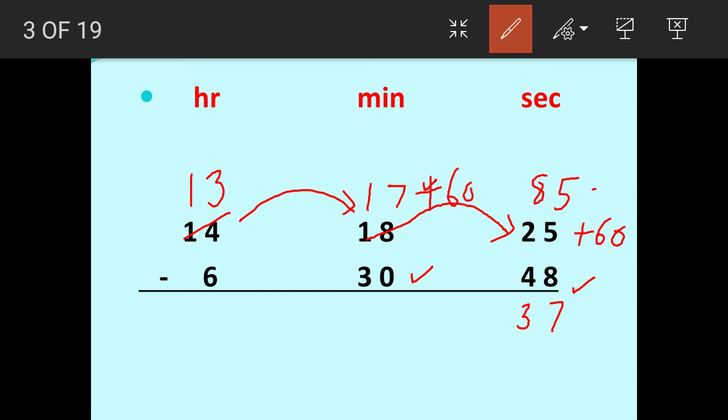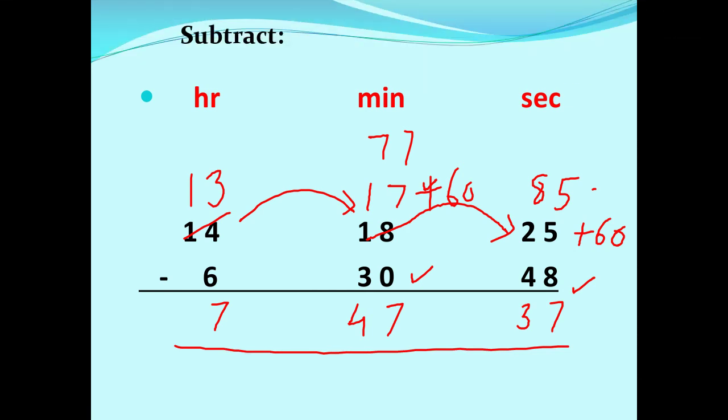Now 17 plus 60 is 77. So we have to subtract 30 from 77. When we subtract 30 from 77 we get 47 and 13 minus 6 is 7. So our answer is 7 hours 47 minutes and 37 seconds.